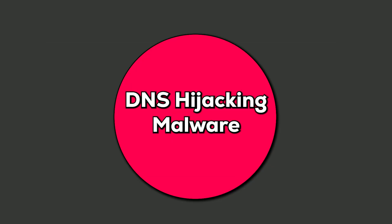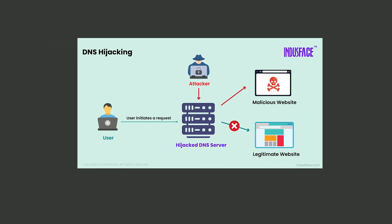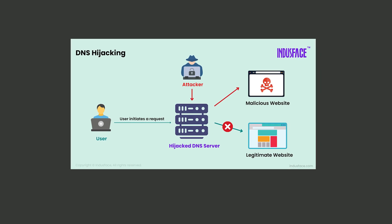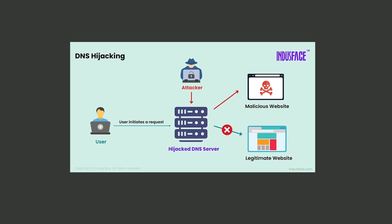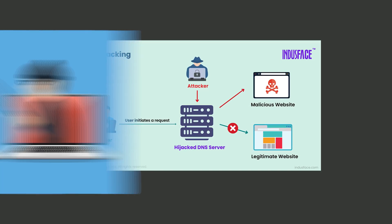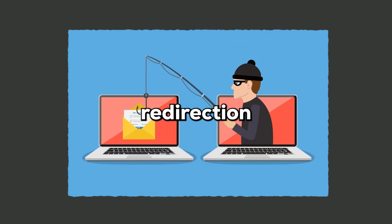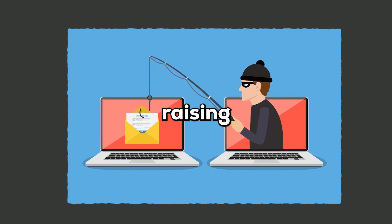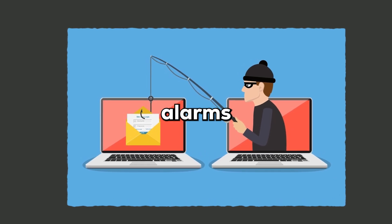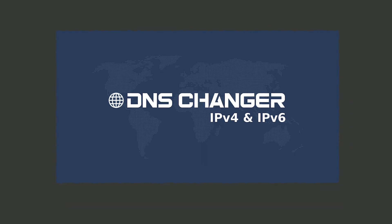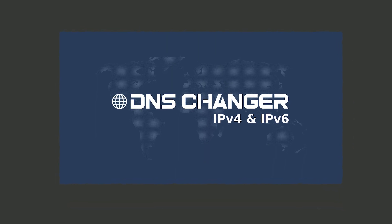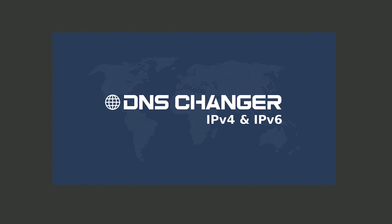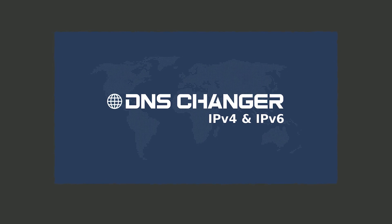DNS hijacking malware manipulates your system's DNS settings, redirecting you to malicious websites even when you type in the correct URL. This redirection can lead to phishing scams and data theft without raising any immediate alarms. DNS Changer is a notorious example that rerouted users to fraudulent sites, highlighting the risk of DNS manipulation.